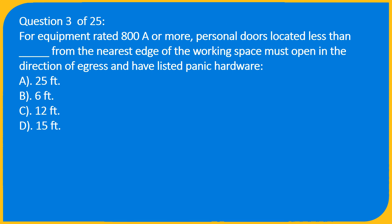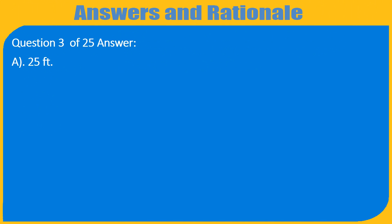Question 3 of 25: For equipment rated 800A or more, personnel doors located less than how many feet from the nearest edge of the working space must open in the direction of egress and have listed panic hardware? A. 25 feet, B. 6 feet, C. 12 feet, D. 15 feet. Answer: A. 25 feet.